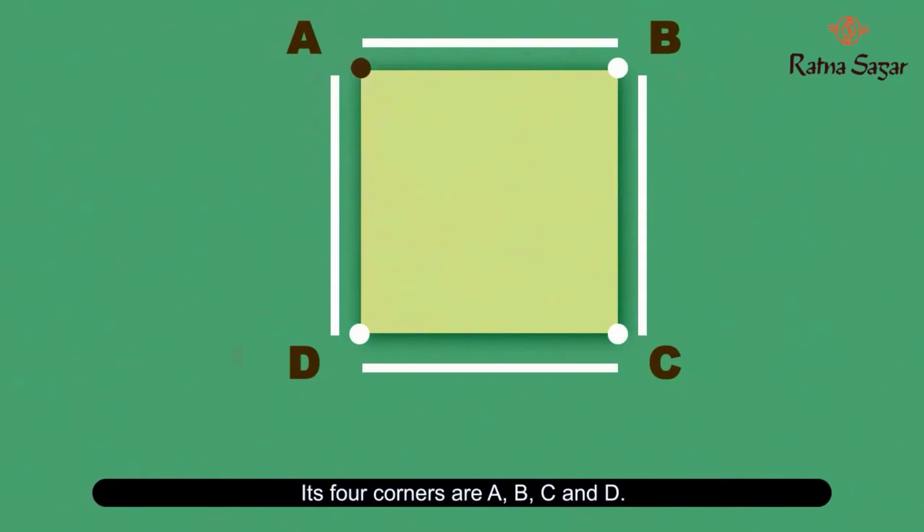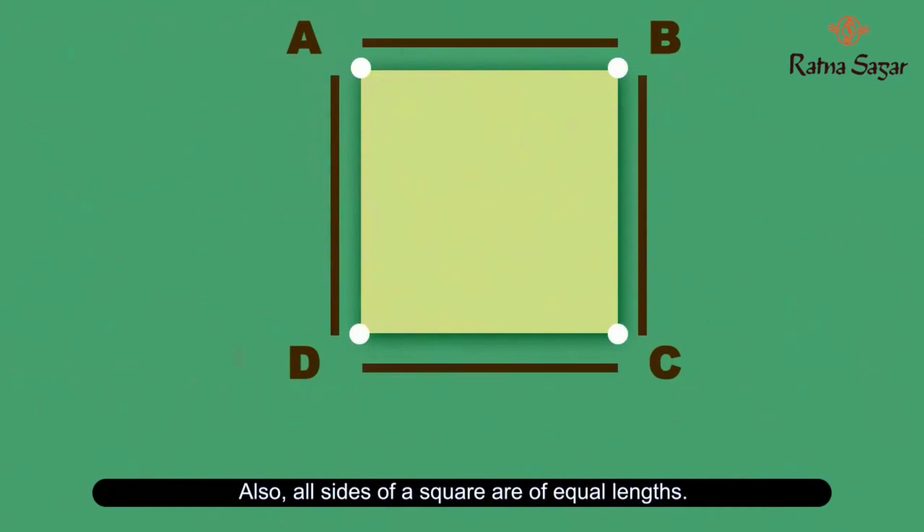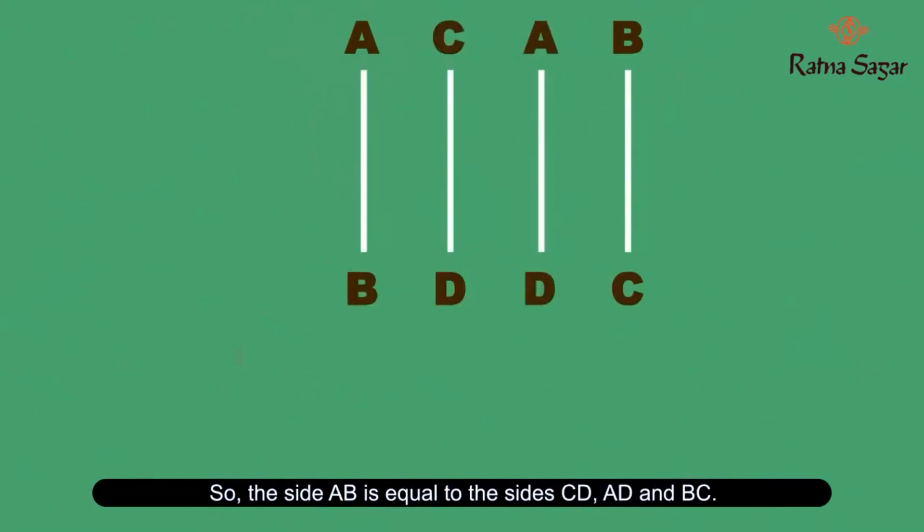Its 4 corners are A, B, C, and D. Also, all sides of a square are of equal length. So, the side AB is equal to the sides CD, AD, and BC.